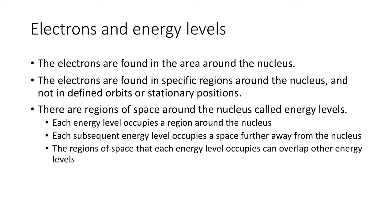Electrons are found in areas around the nucleus. These electrons are found in a specific region — areas of 3D space around the nucleus — but they are not in defined orbits or stationary positions. That means they're not stationary around the nucleus, and they're not orbiting the nucleus. So it's not as if they're going around in a predefined path, like planets around the sun. The animation showing a defined orbit looks cool and is the picture of the atom you generally see, even though it's not technically correct.